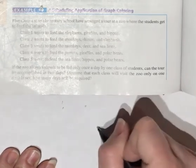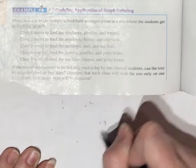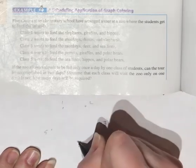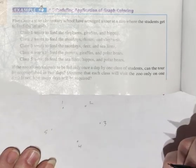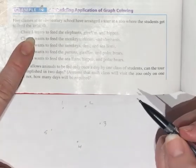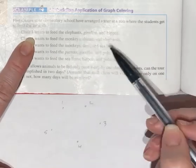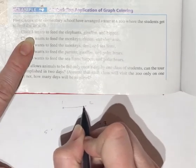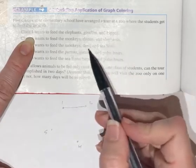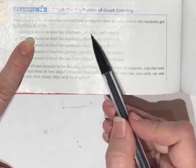One, two, three, four, five. So class one wants to feed elephants, giraffes, and hippos. So anybody else wanting to feed elephants? Well class two. So one and two have a conflict for elephants. Double check anybody else for elephants. No more elephants.